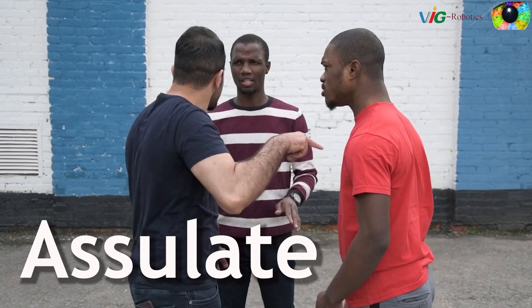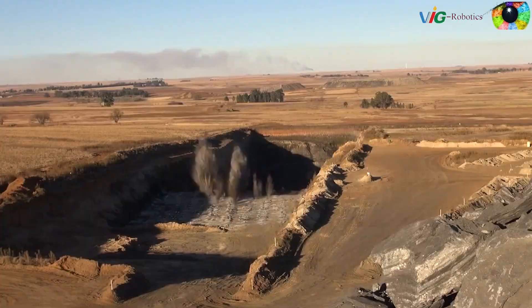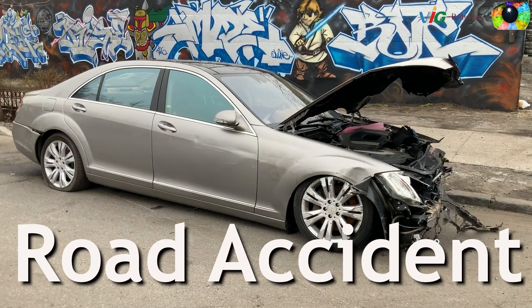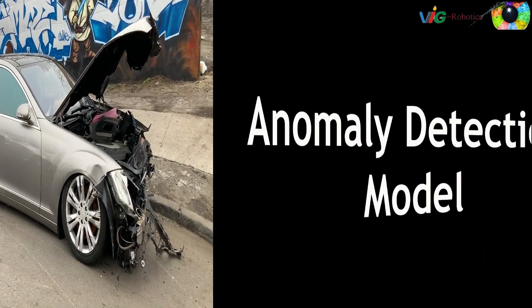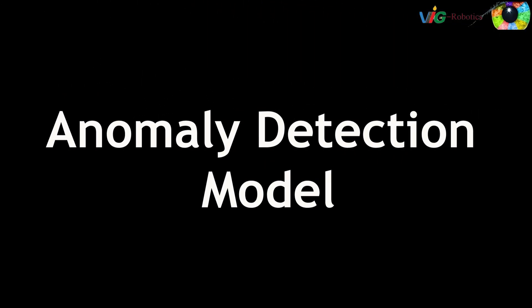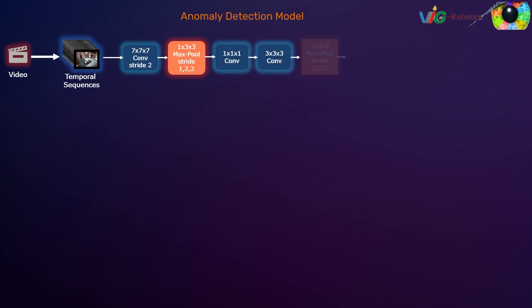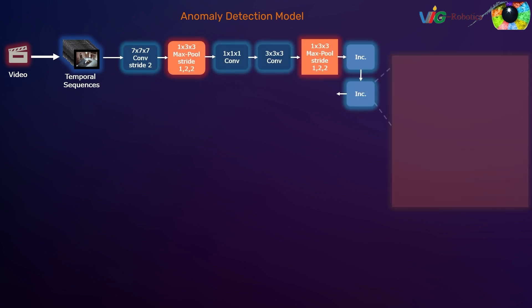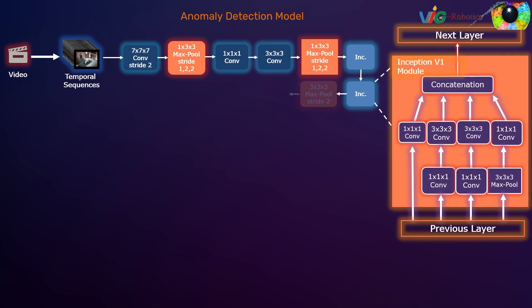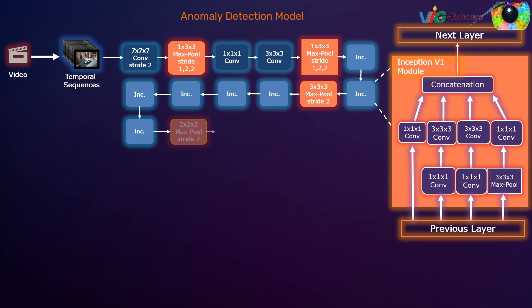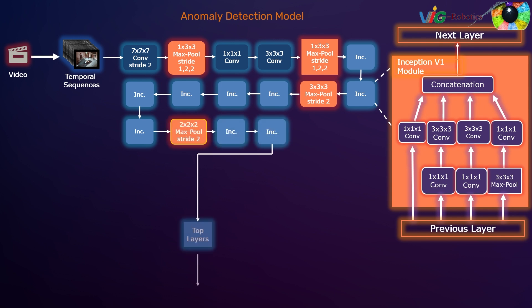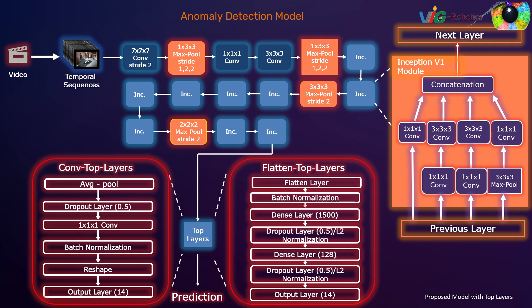The anomaly detection model is based on the Inflated Inception Network with convolutional top layers. The inflated network is an I3D-like 3D convolutional network model with an inflated 3D design of Inception V1 as the base architecture.